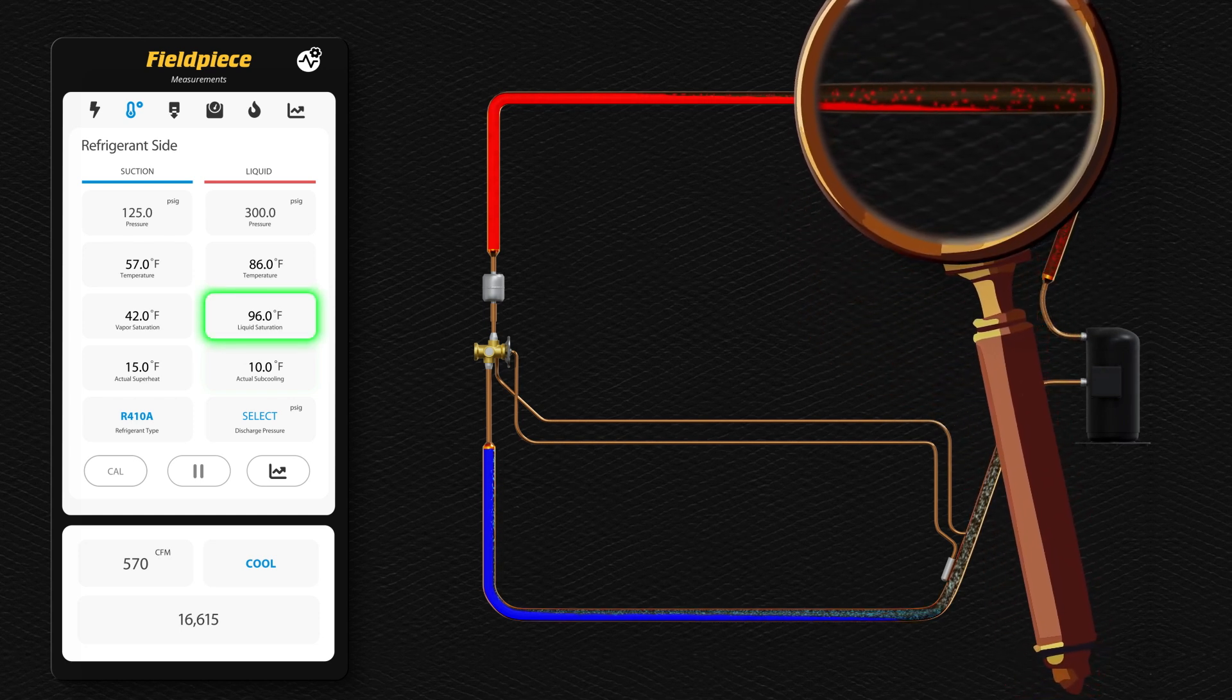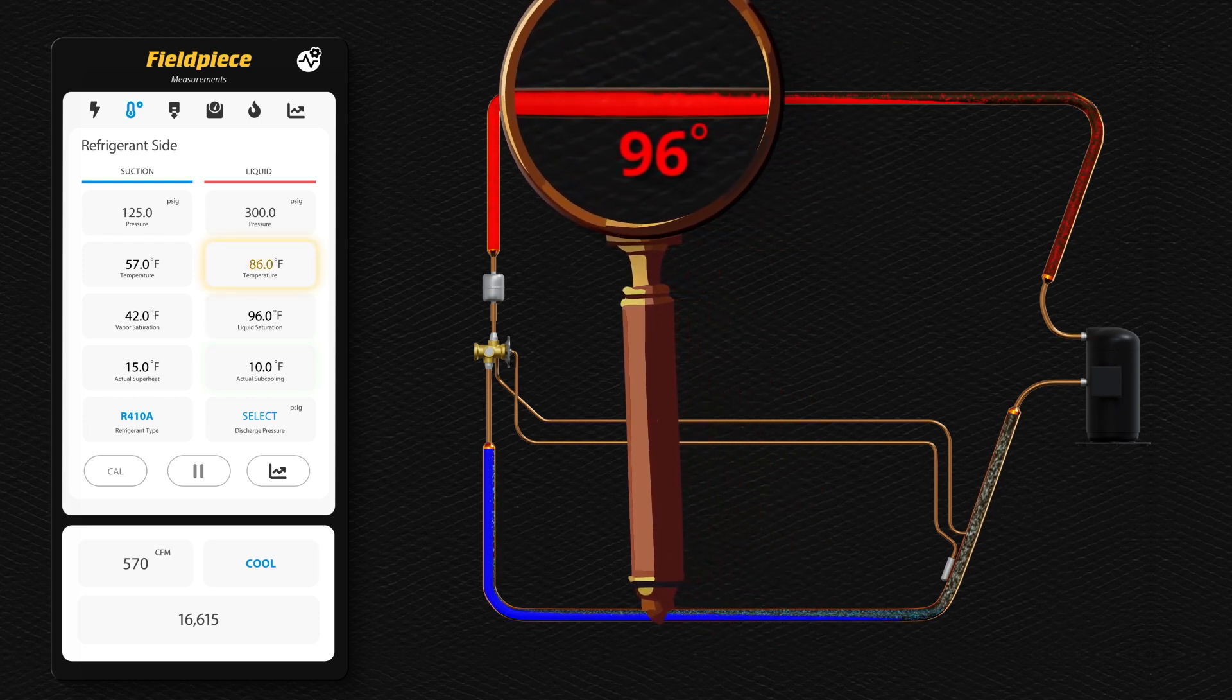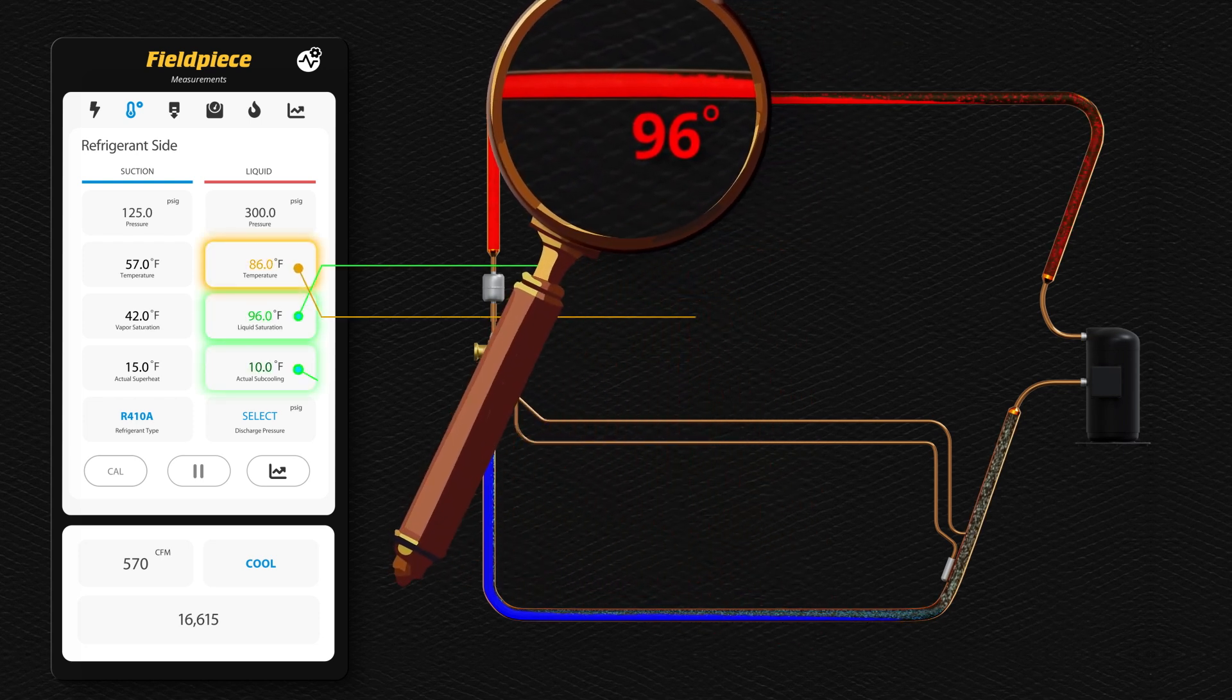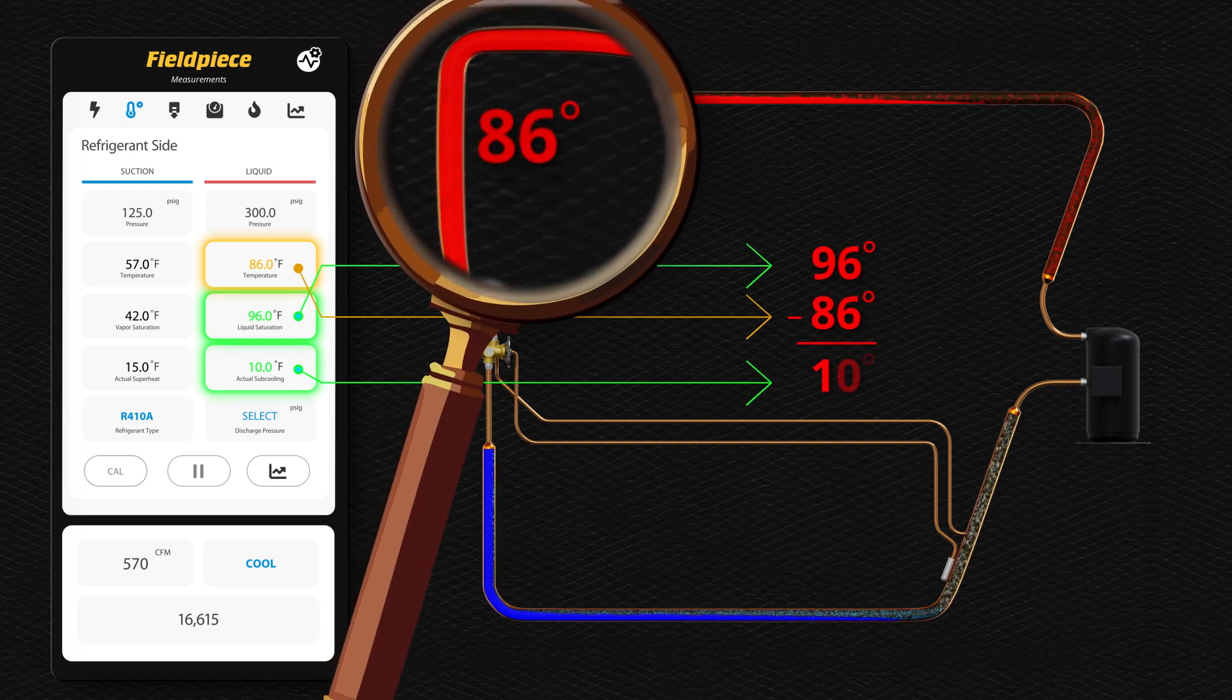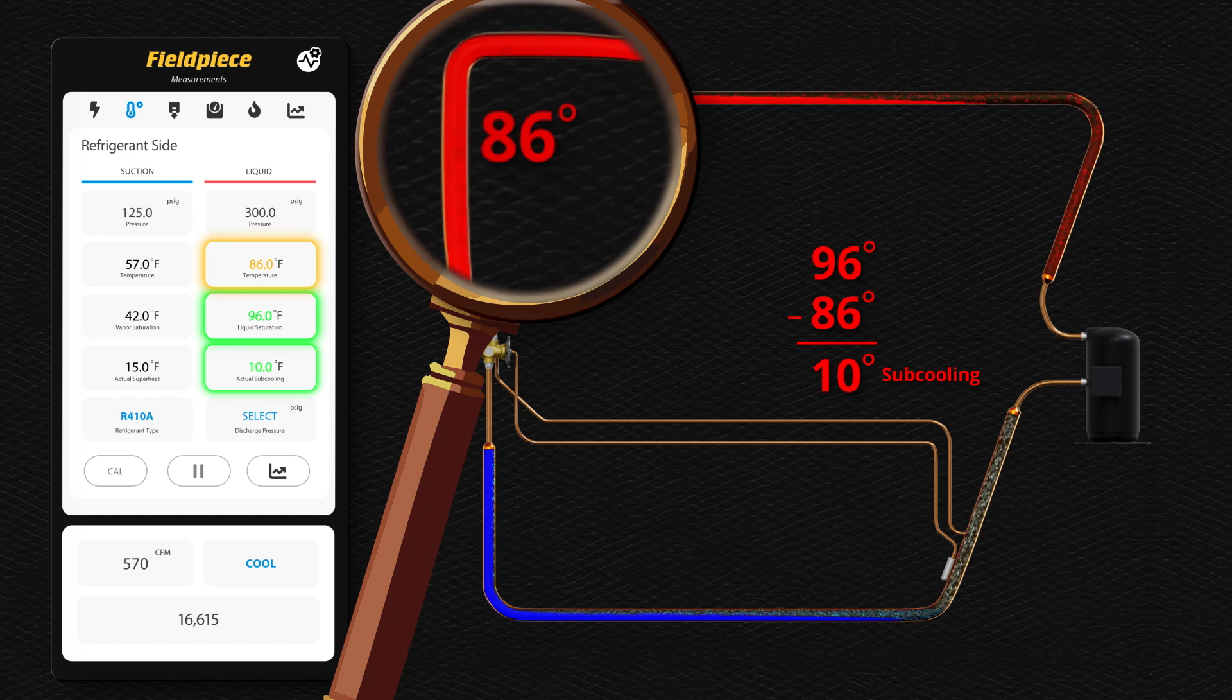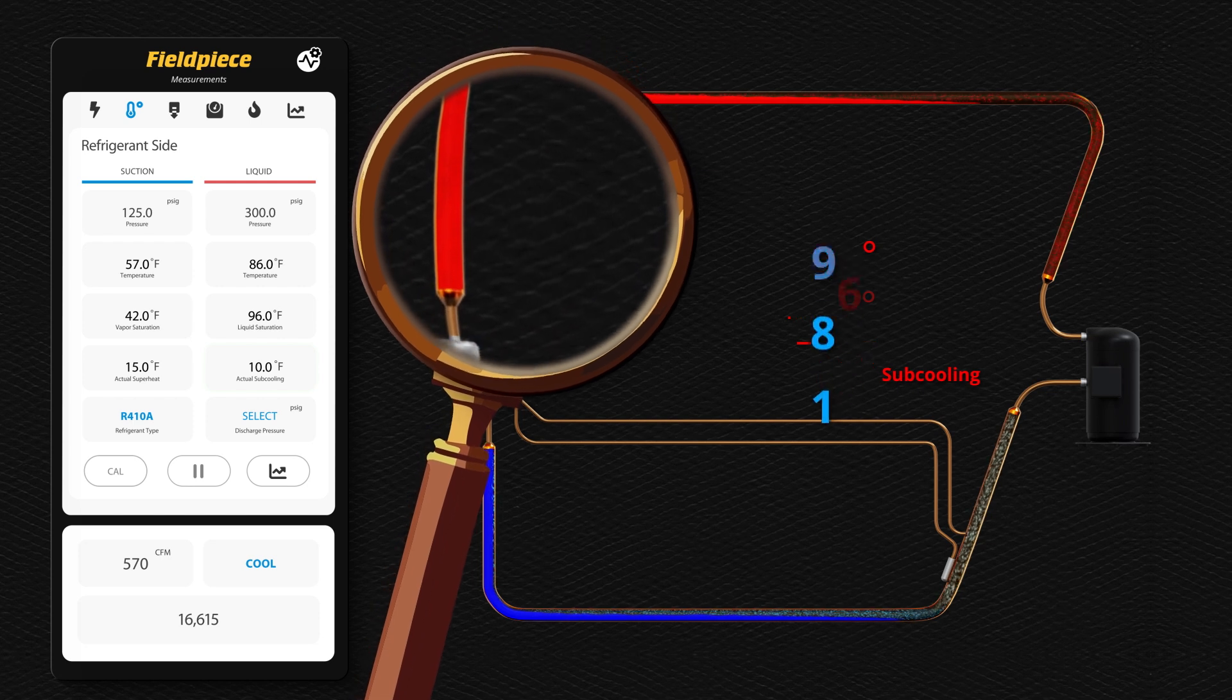As the temperature travels further through the circuit, the saturated temperature remains at 96 degrees, but the actual refrigerant temperature equals 86 degrees when it leaves the condenser. Since the refrigerant is below the saturated temperature by 10 degrees, the refrigerant is 100% liquid with 10 degrees of sub-cooling.